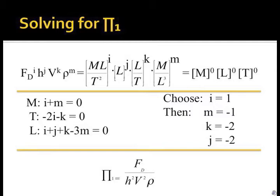By putting the variables in the reference dimensions, the power of each variable can be determined. To be dimensionless, all reference dimensions must be canceled out or their powers add to zero. After choosing i equals 1, the remaining powers can be found. Applying these powers to the corresponding variables produces a pi term.